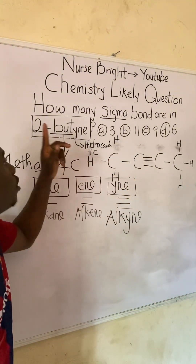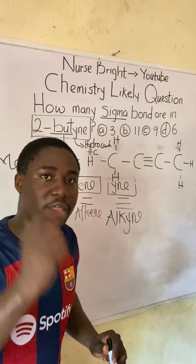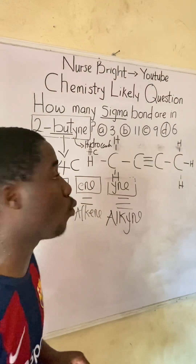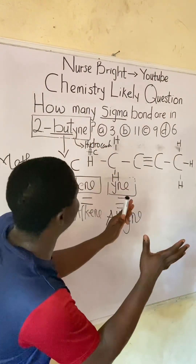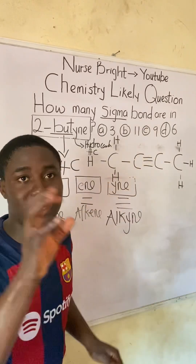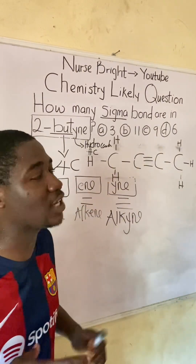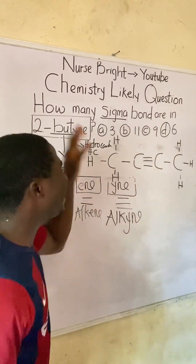So the structure we've now drawn is 2-butyne. Moving further, now that we've drawn the structure, let us determine the number of sigma bonds. It is very easy, but something must be noted first.